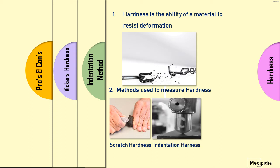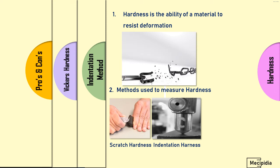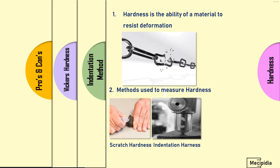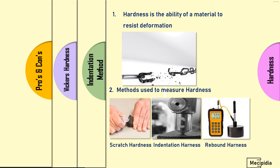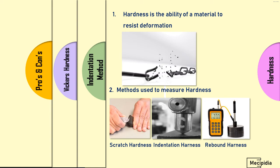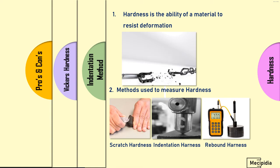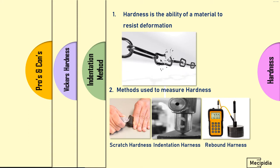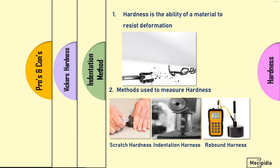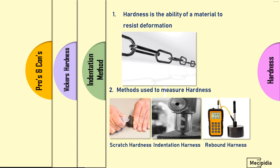The second one is indentation hardness, where the indenter is applied with a load on the test piece, the indentation is measured and converted into hardness. The third one is rebound hardness, where the load is applied on the test piece until elastic deformation and the energy loss is evaluated and converted into hardness. Indentation hardness method is widely used in the automobile engineering field.